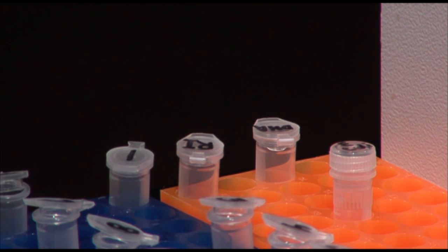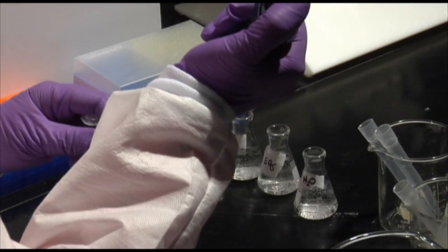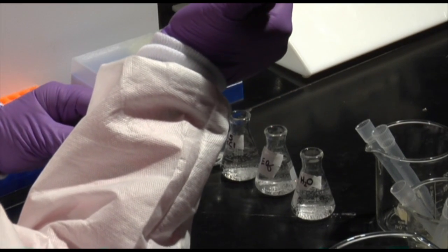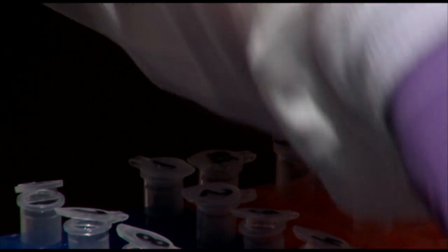Label nine microtest tubes, one through eight, and one control tube. Pipette 30 microliters of qualified water into each tube. Add five microliters of buffer and five microliters of DNA.